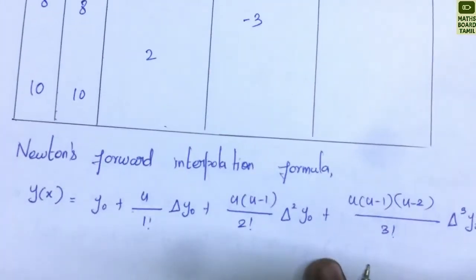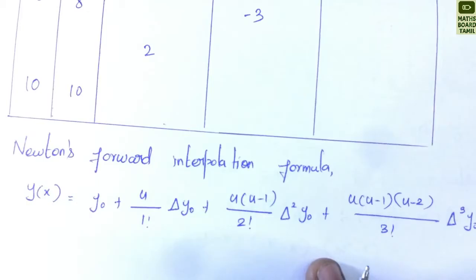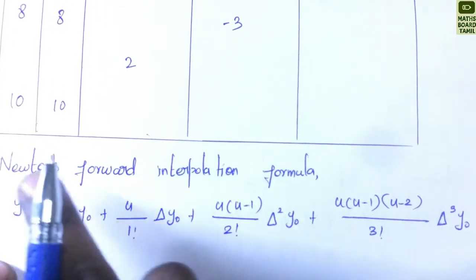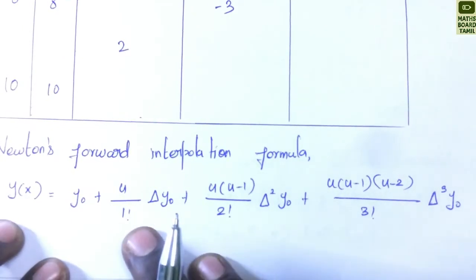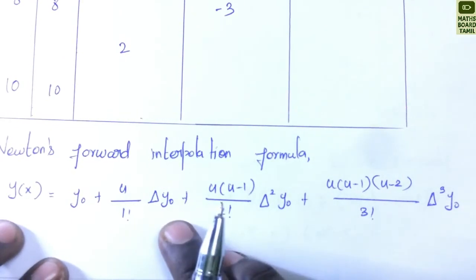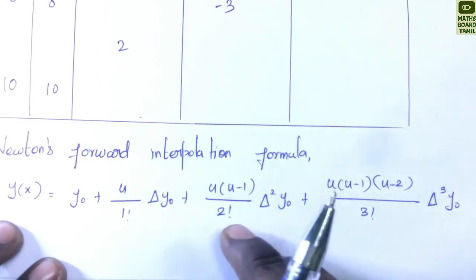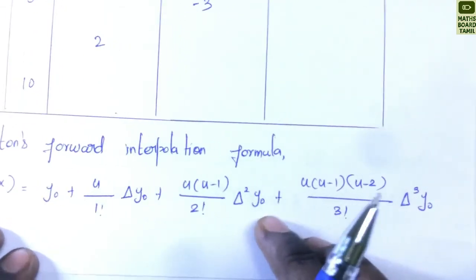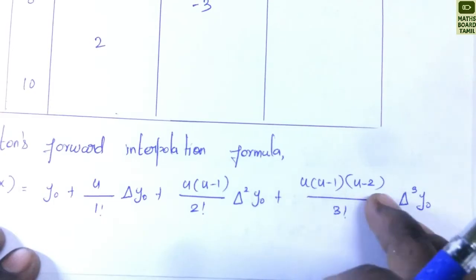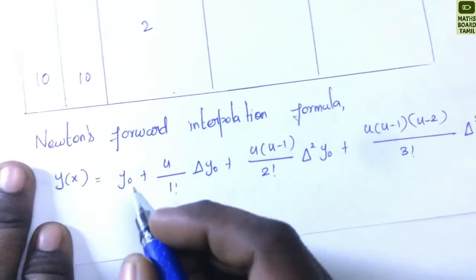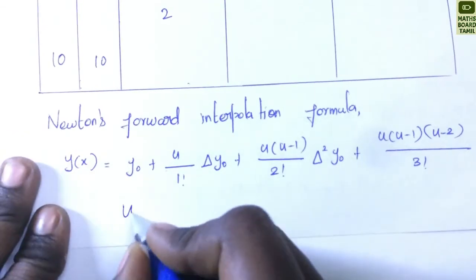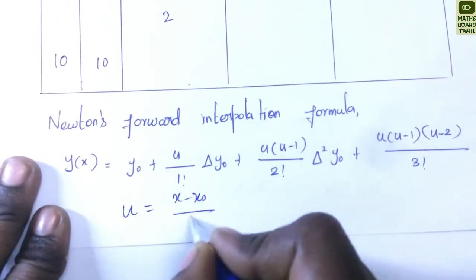Newton's forward interpolation formula: y(x) = y0 + (u/1!) Δy0 + (u(u−1)/2!) Δ²y0 + (u(u−1)(u−2)/3!) Δ³y0, where u = (x − x0) / h.